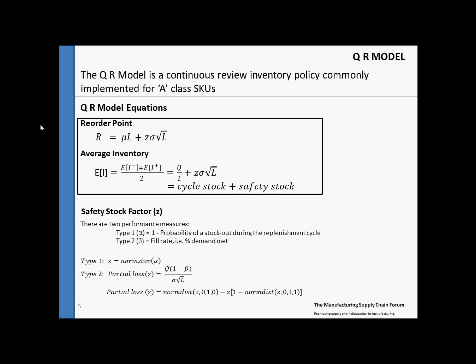The safety stock factor accounts for the amount of variability we're willing to accept. There are two performance measures used for the safety stock factor. The first is the cycle service level, sometimes called type 1 or alpha. This is defined as 1 minus the probability of a stockout during the replenishment cycle. For example, if we are willing to accept 5% probability of a stockout during a replenishment cycle, this means our cycle service level is 1 minus 5%, or 95%.